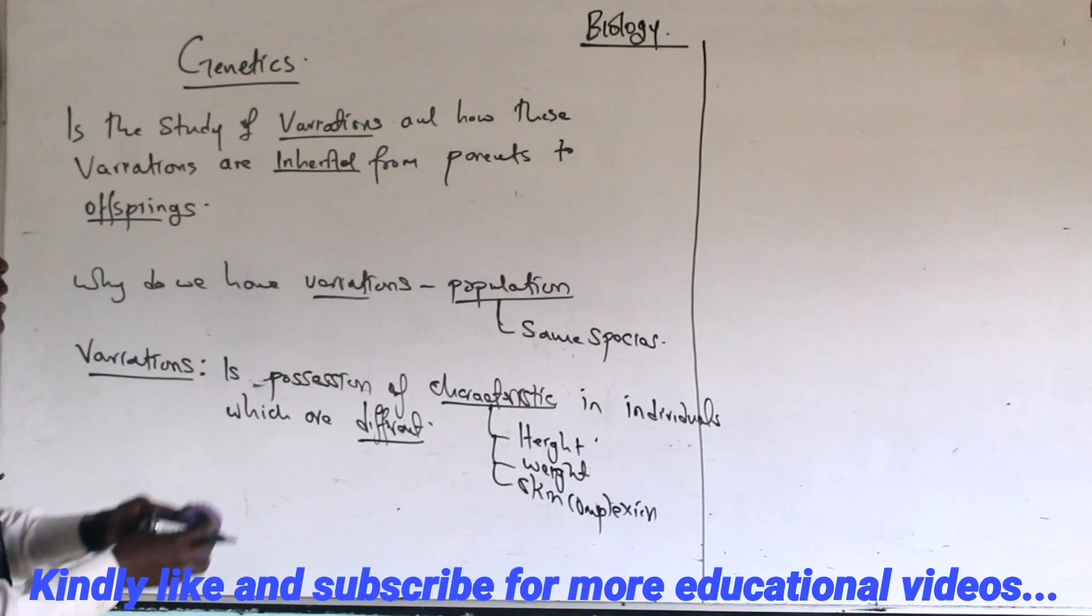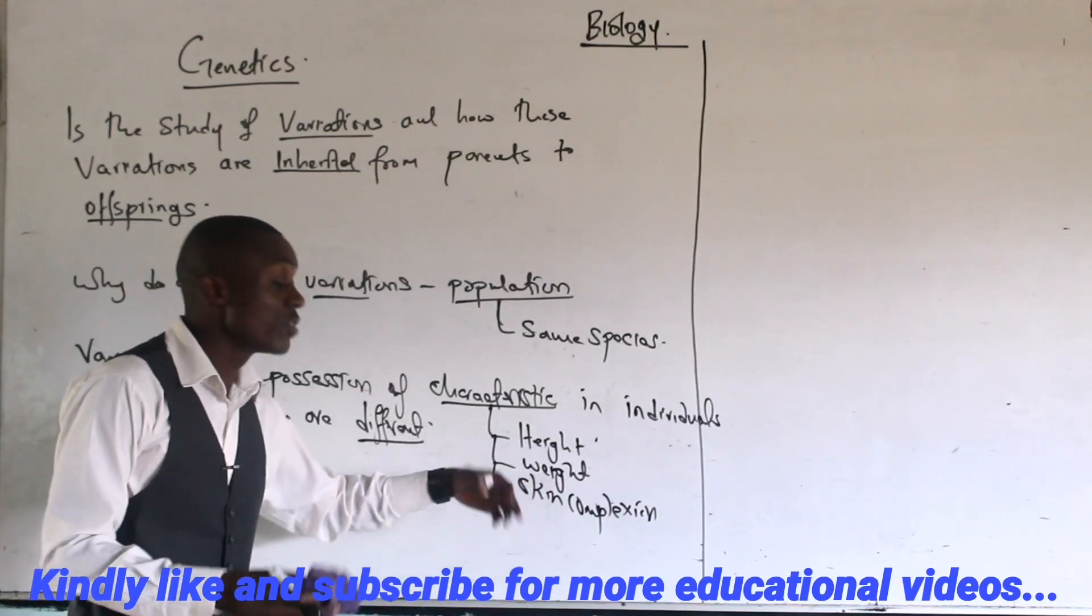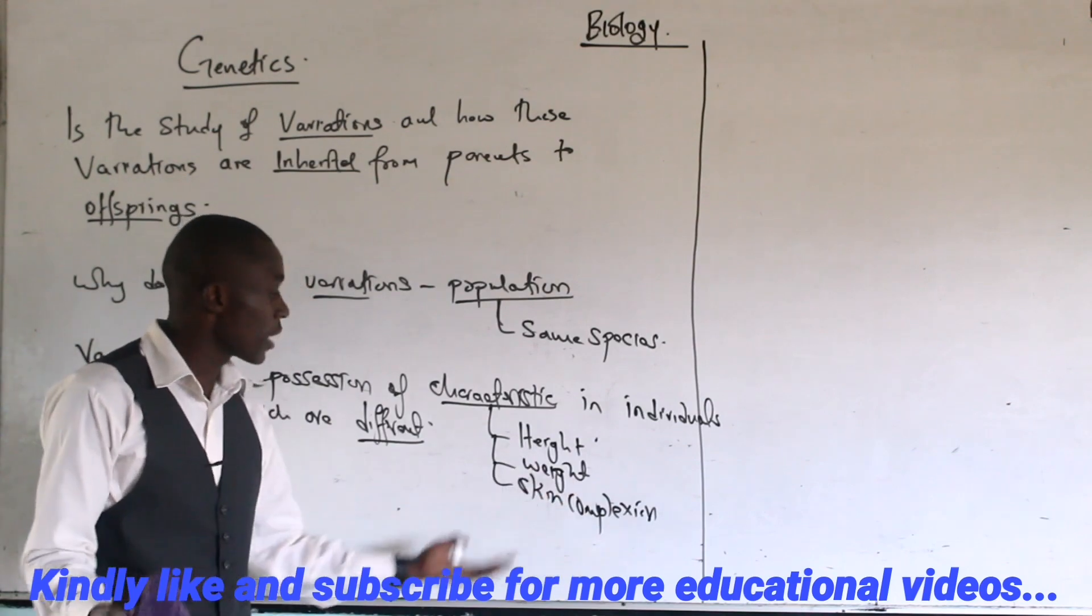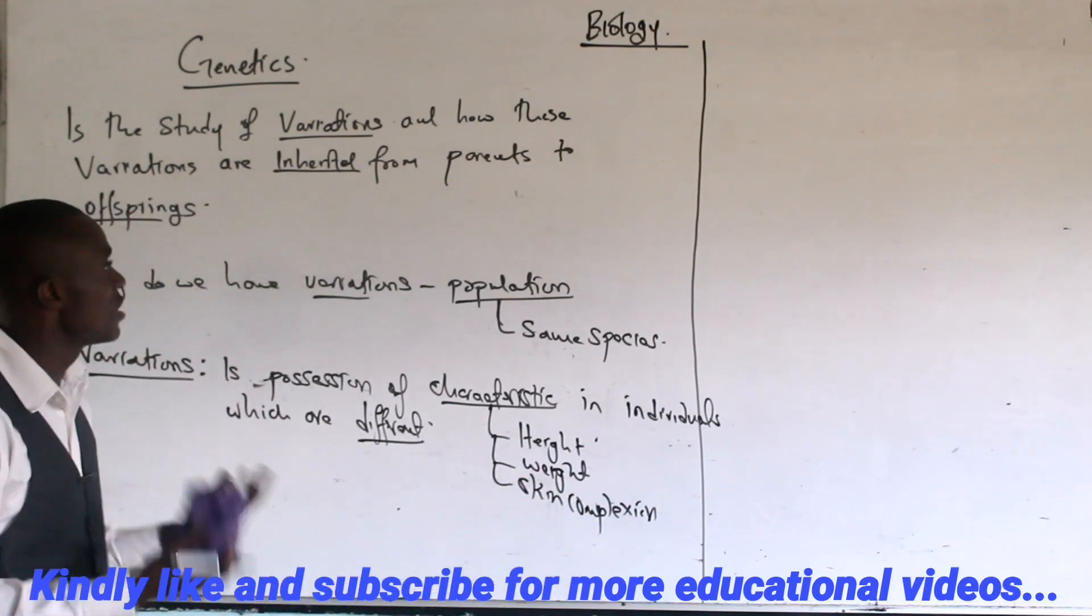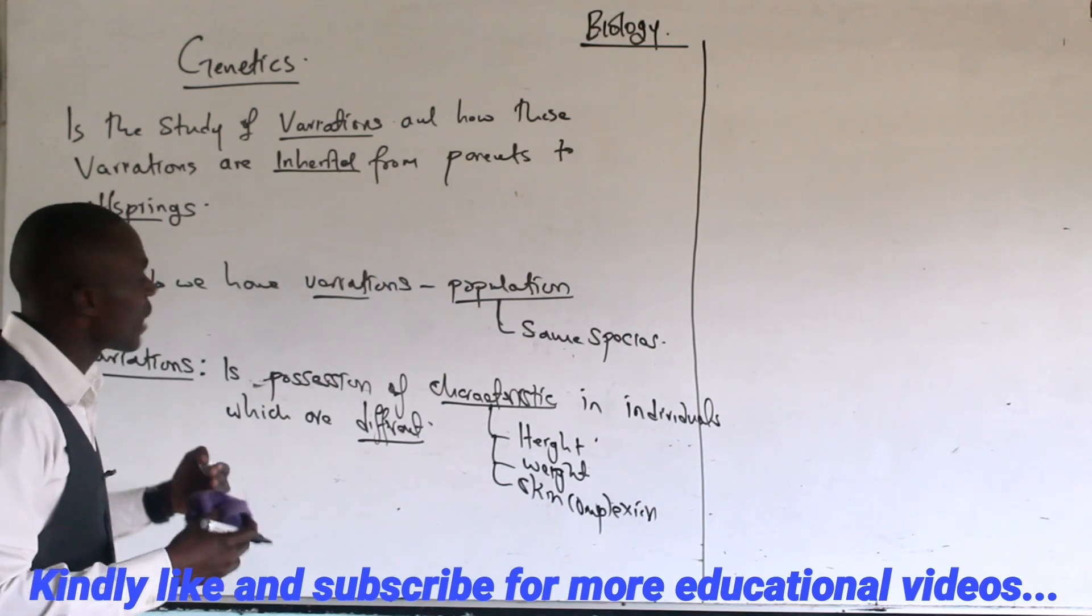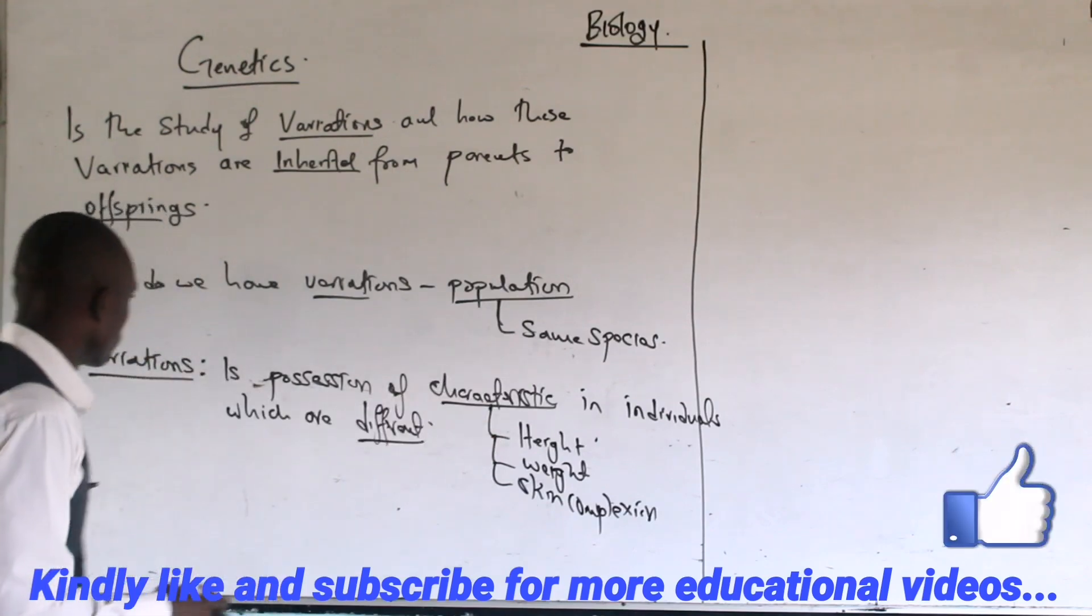If you look at a given population, height of individuals vary, weight of individuals vary, skin complexion of individuals vary. That's why in genetics we want to focus on why are these variations and how are these variations passed on from generation to generation to generation.